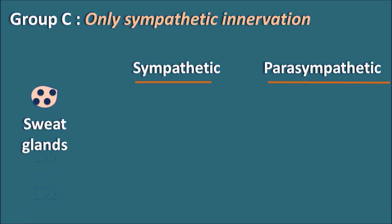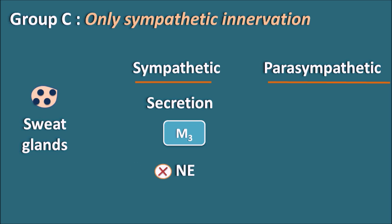Another target is the sweat glands. At the sweat glands, the sympathetic system can produce secretion, but this action is mediated through M3 receptors. M3 receptors are cholinergic receptors but can still be activated by the sympathetic system. Here, the mediator is not norepinephrine but acetylcholine — the sympathetic system activates the sweat glands by release of acetylcholine, which acts on M3 receptors to produce sweat secretion.